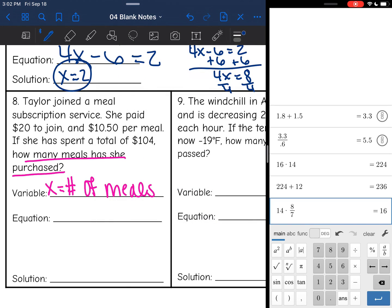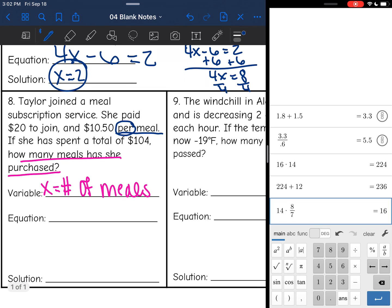Okay, so she paid $20 to join and then $10.50 per meal. Usually per means that's where the x goes, and we talked about how x is the number of meals. So that makes sense. It's going to be $20 to join, and then on top of that $20 to join, so I'm going to add, it was $10.50 per meal, and then she spent $104 in total.